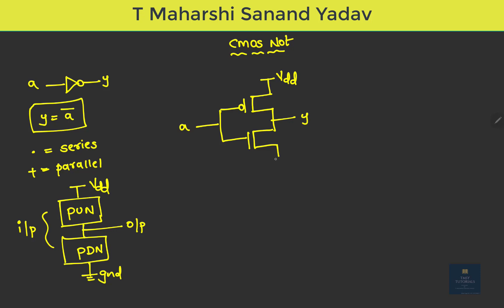The top portion is connected to supply voltage VDD and the bottom part is connected to ground. Now, the important point is to mark the terminals — there are three terminals: source, drain, and gate. For the PMOS, the top terminal is the source and the lower is the drain. For the NMOS, the upper terminal is the drain and the lower is the source.